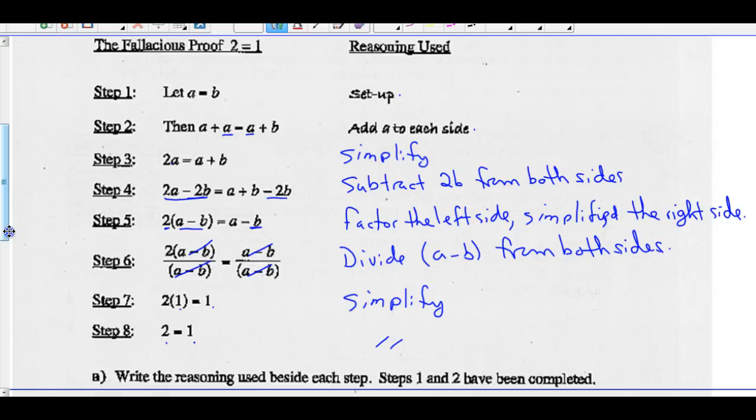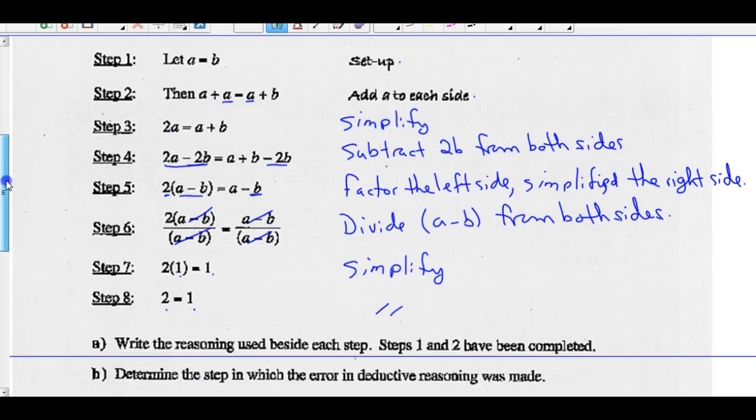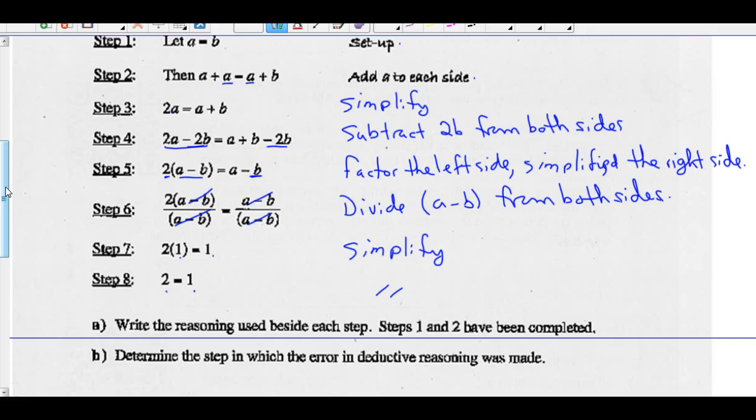Part B, that can't be true. 2 can't equal 1. What the heck? Determine the step in which the error in deductive reasoning was made. So somewhere there was an error in deductive reasoning. See if you can spot it. I'll give you a few minutes to think about it. You can pause it and think about it.